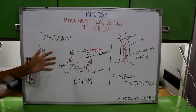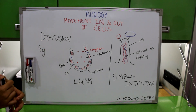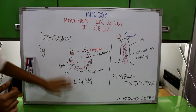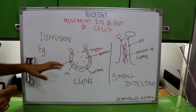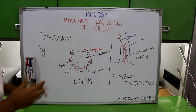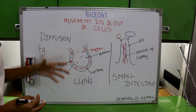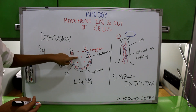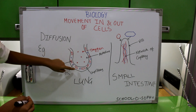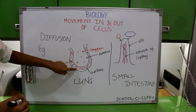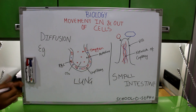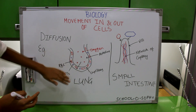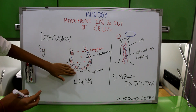I am going to explain examples of diffusion occurring in the human body. The first example is the lung. This is an alveolus — a small part of the lung where gas exchange takes place. When you inhale or breathe in, the concentration of oxygen in your lungs is more than the concentration of oxygen in your blood or in your red blood cells (RBCs). So oxygen diffuses from the lung into your RBCs, and equilibrium is reached between your lung and your blood.